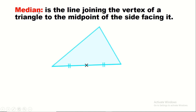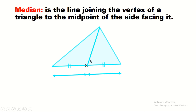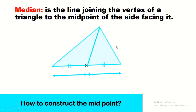Now let's learn about the second special line that can be drawn in a triangle: the median. The median joins the vertex to the midpoint of the side facing it — 'median' comes from 'midpoint.' To draw a median, we first locate the midpoint of the side, then join that midpoint to the opposite vertex.